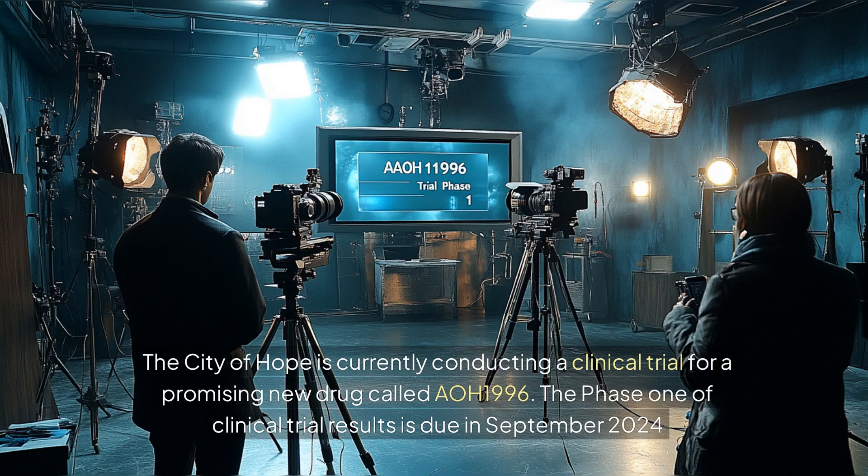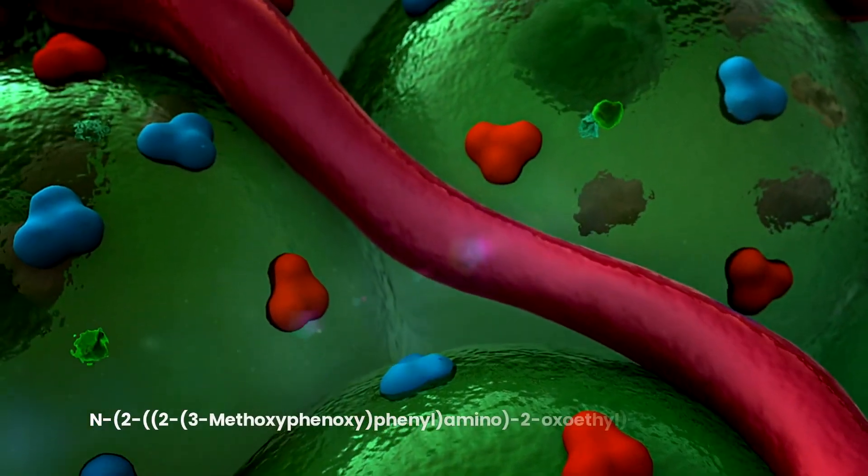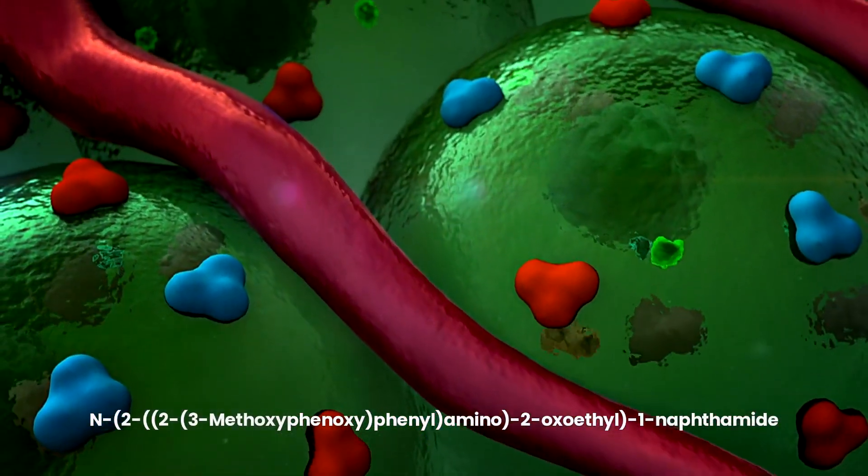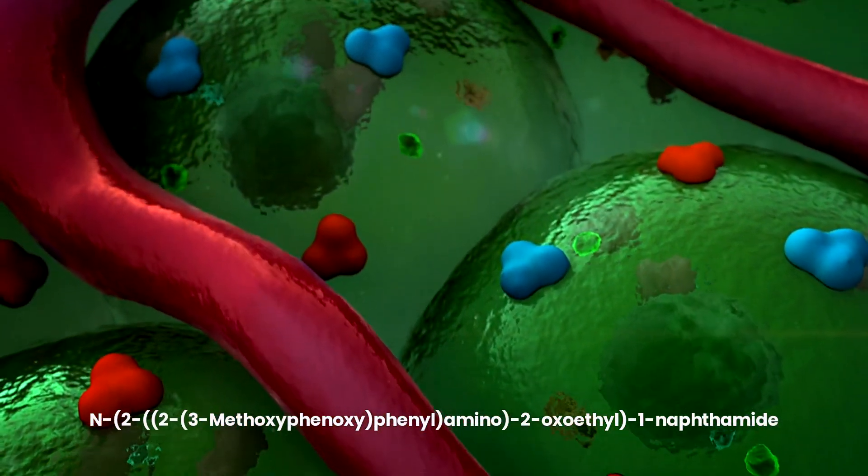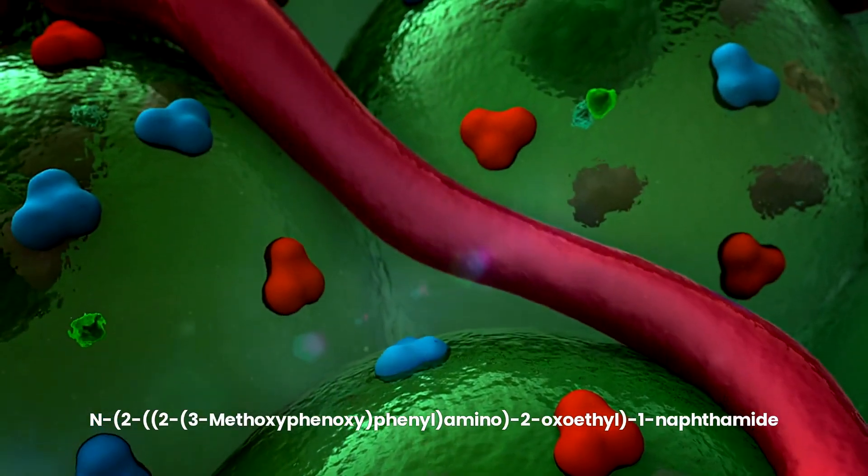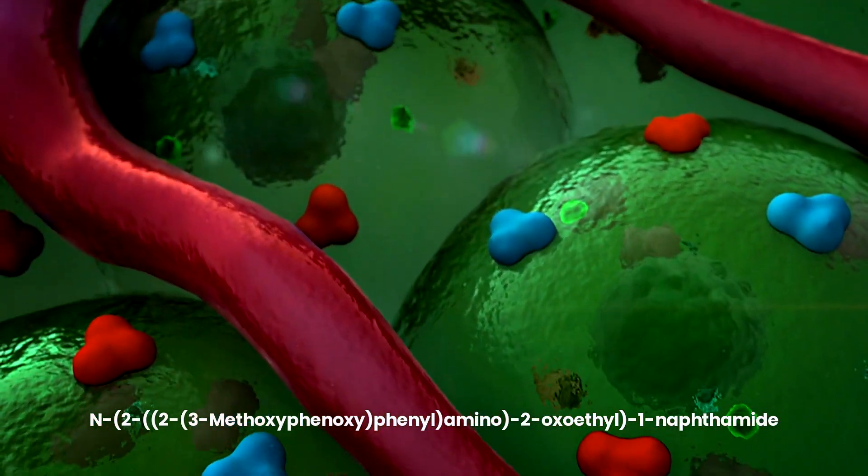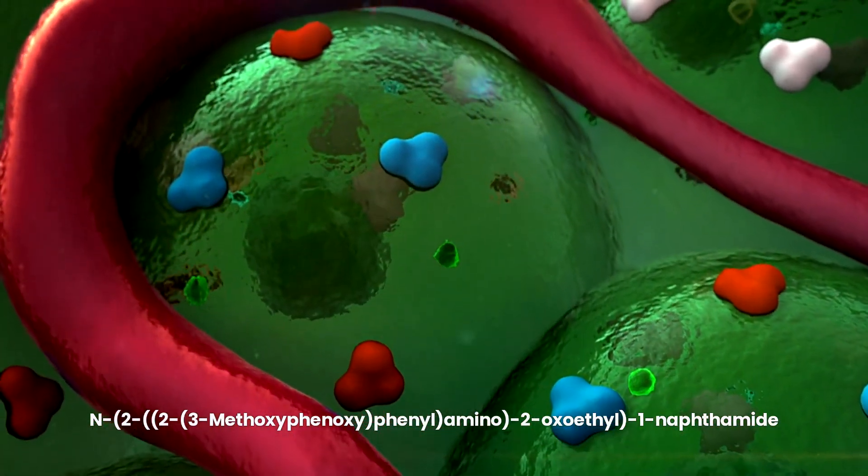...new drug called AOH1996. The phase one clinical trial results are due in September 2024. What is AOH1996? AOH1996, also known by its scientific name N-(2-((2-(3-methoxyphenoxy)phenyl)amino)-2-oxoethyl)-1-naphthamide, is an innovative treatment designed to target and inhibit...